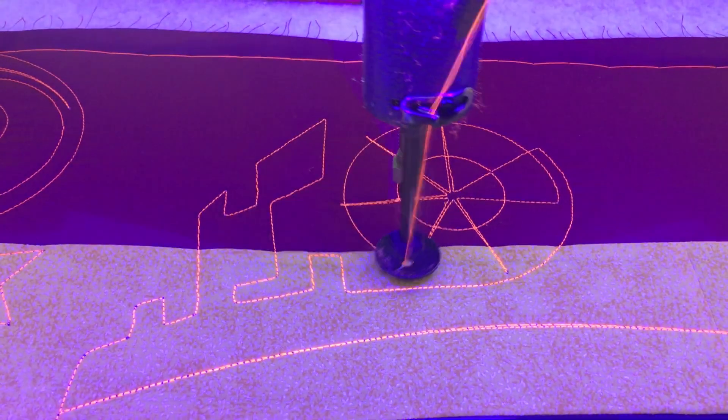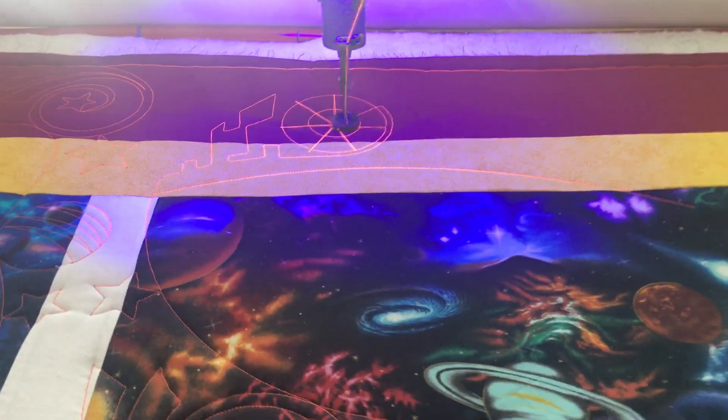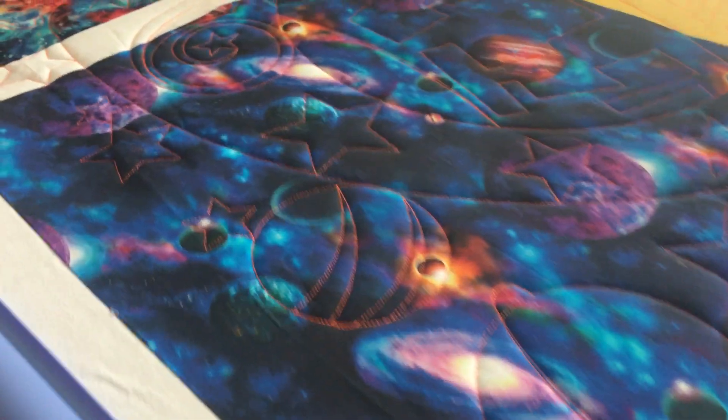This is turning out really good. As you can see, she's got a lot of planets and the solar system. You can see some of the quilting already done.